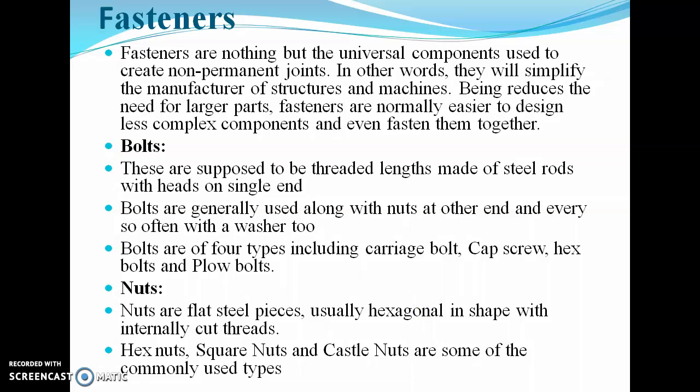The next point is fasteners. Fasteners are universal components used to create non-permanent joints; they simplify the manufacture of structures and machines by reducing the need for larger parts. Fasteners are normally easier-to-design, less complex components that can be fastened together. Types of fasteners include bolts, nuts, screws, and nails.